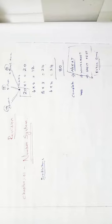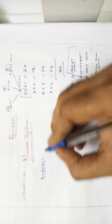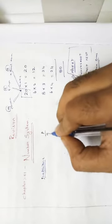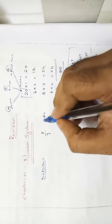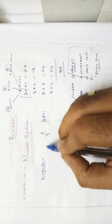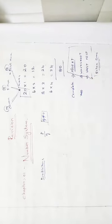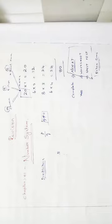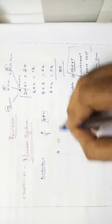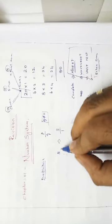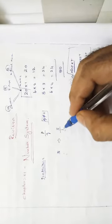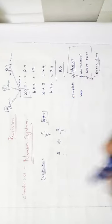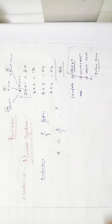In exercise 1.1, we find whether a given number is rational or not and find rational numbers between two rationals. A rational number is a number in the form p/q where q ≠ 0 and p and q are integers. For example, 3 can be written as 3/1, which is p/q form, so 3 is a rational number.